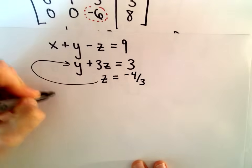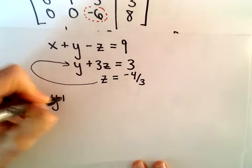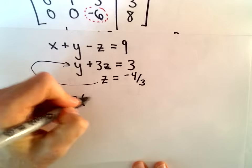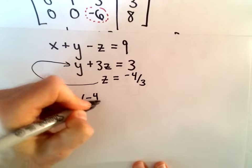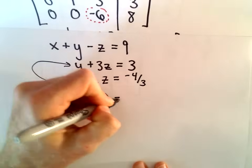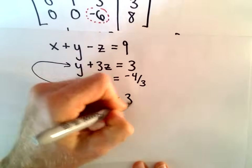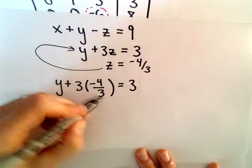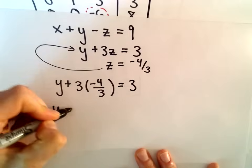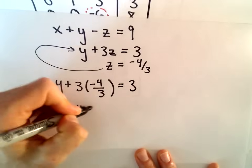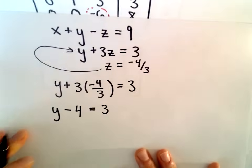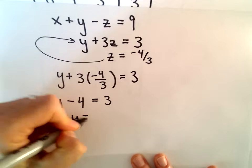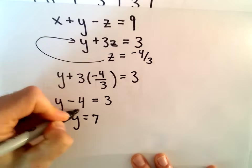Using our second equation, we have y plus 3 times z — which is negative 4 thirds — equals positive 3. The 3s cancel out, so we have y minus 4 equals 3. Adding 4 to both sides, we get y equals positive 7.